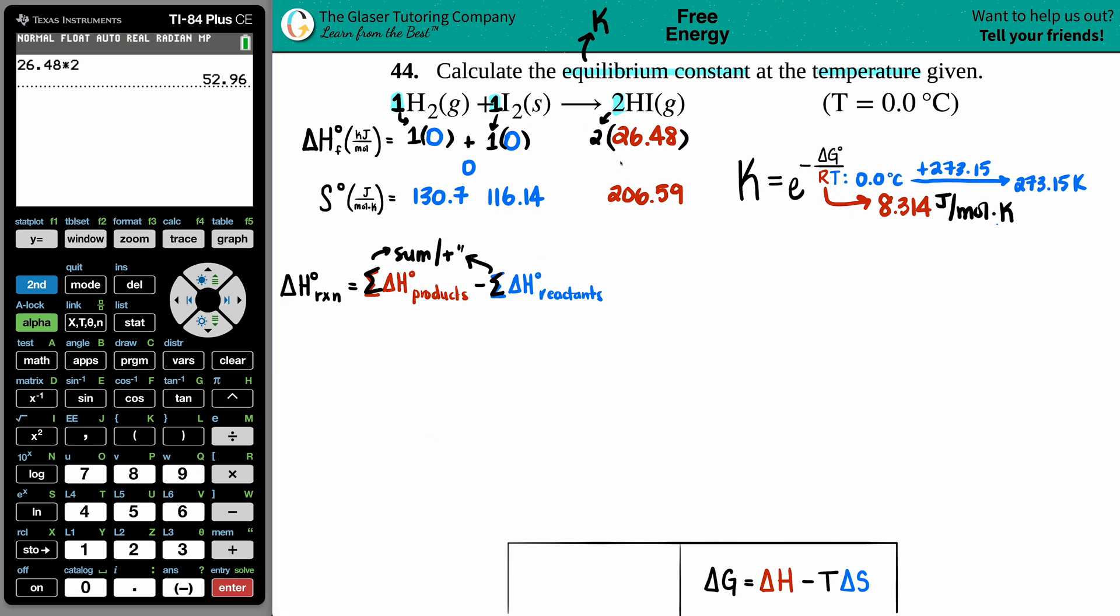It all goes by the coefficients: you had one H₂, you had one I₂, and you have two HI's. Take the values that you found at the back of the textbook and multiply them by your coefficients. You would times one by zero, one by zero, but then this one has to be times by two. Zero plus zero is zero, and 26.48 times two I get 52.96.